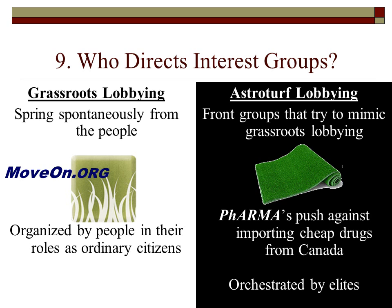Number nine: who directs interest groups? First is grassroots lobbying — lobbying which springs up directly from the people. This is what moveon.org claims to be. The idea is that ordinary people, in their roles as citizens, without a ton of money or influence, come together to tell an elected official that something is really important to them and they want to influence how they vote or act.